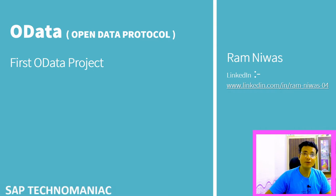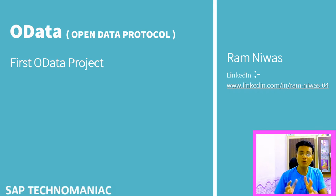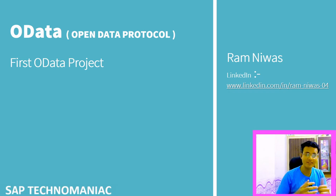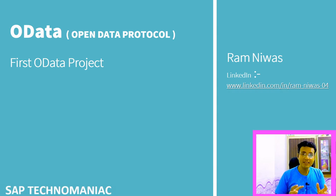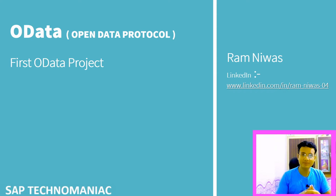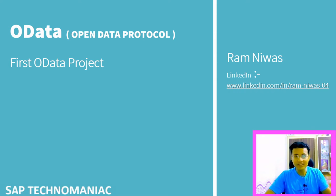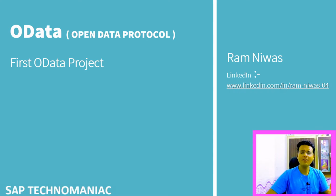Hello everyone, welcome to SAP Technomania. In my last video, we discussed how to create an OData service from SAP to expose data outward. We created one SEGW project, defined one entity set and entity type to expose employee data, and generated the MPC, DPC, MPC extension, and DPC extension classes, along with one service.